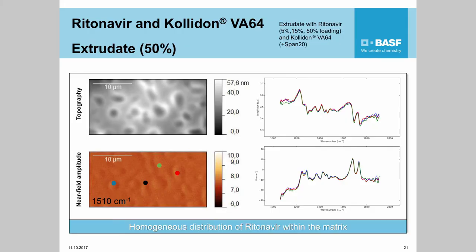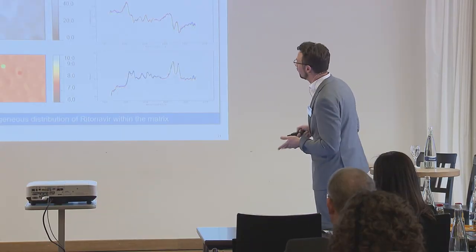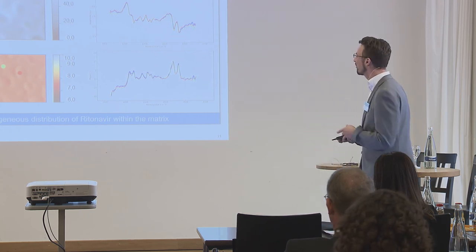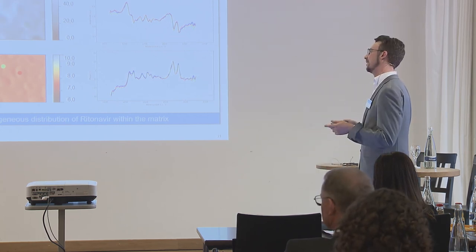We were interested what happens if we go up with the loading. Here you see an extrudate which has 50% of Ritonavir within it. Here you see reference spectra taking at different places of the extrudate surface, a topography image, and a near-field amplitude image at 1510 wavenumbers. The distribution of the signal is very homogeneous. We were expecting at a certain point that we will see some phase separation, some crystallization, and it didn't happen.